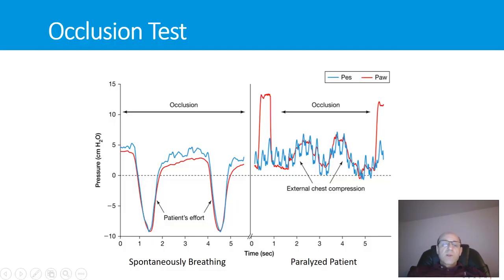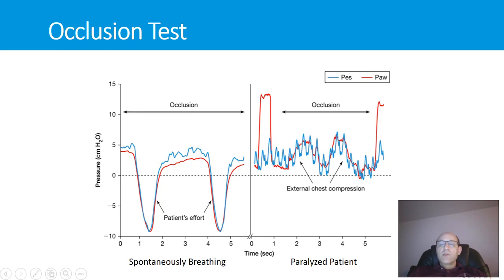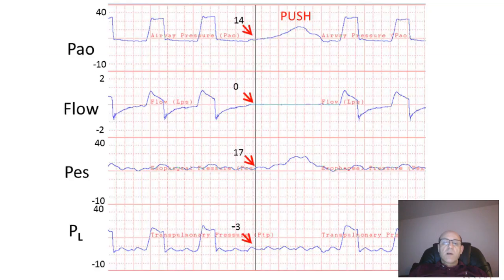In a spontaneously breathing patient, you perform an expiratory occlusion test: the esophageal pressure will drop at the same magnitude as the drop in airway pressure. In a paralyzed patient, you apply external compression of the chest after an expiratory hold, and the rise in esophageal pressure should be similar to the rise in airway pressure, confirming the catheter is working well. Transpulmonary pressure is read at end-expiration when flow is zero. For example, with airway pressure of 14 and esophageal pressure of 17, the transpulmonary pressure is 14 minus 17 equals minus 3.